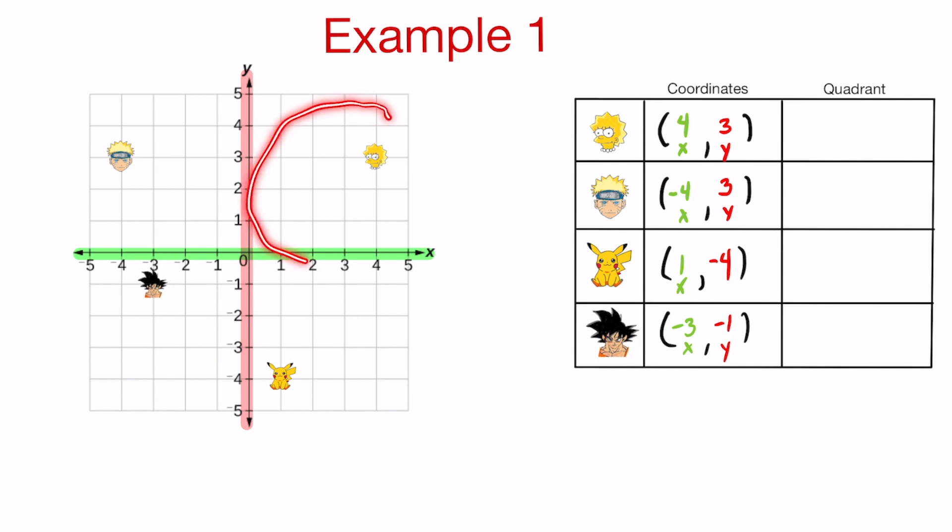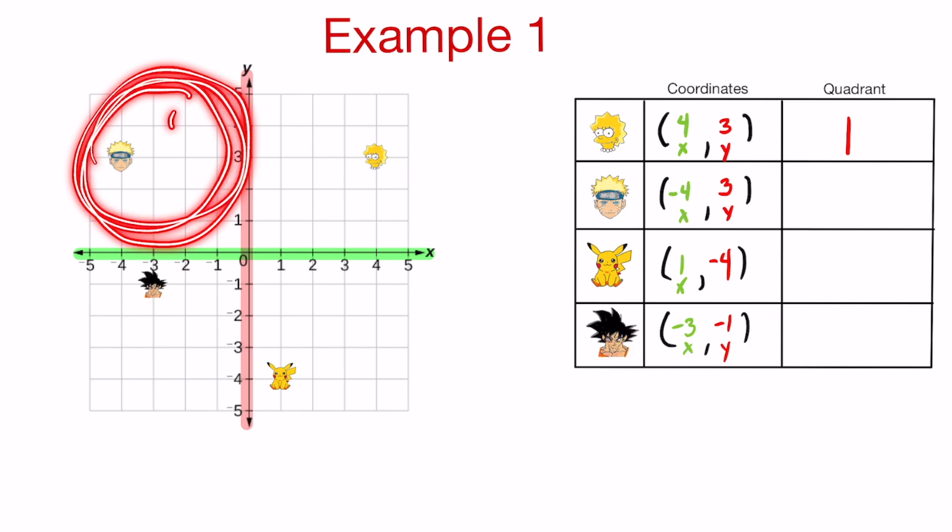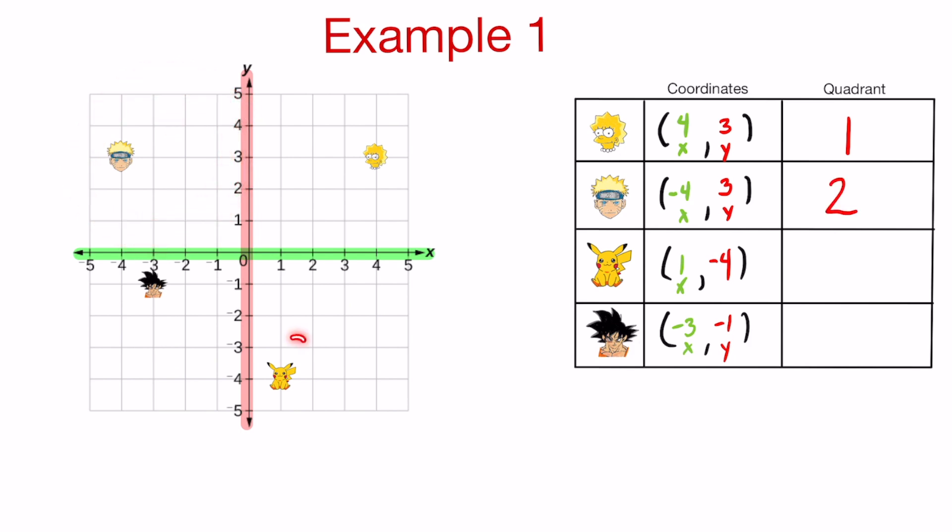Let's start with Lisa. She's in this section. So if you guys remember from the first slide, that is just quadrant one. If I look at Naruto, he's on this side. That is quadrant two. If I look at Pikachu, Pikachu's right at the bottom right there. And that is quadrant four. I try to trick you and mix him around. And the last guy, Goku. Quadrant three.